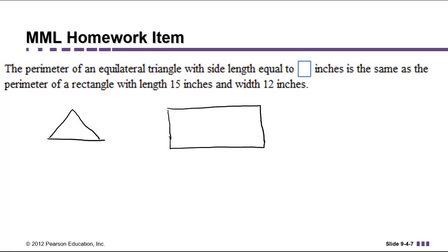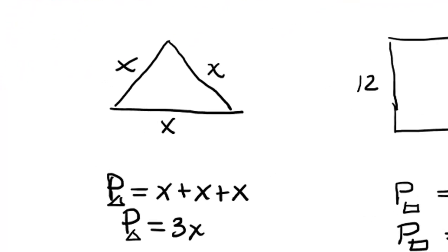We are looking for the lengths of the sides of the triangle, so I'm just going to call them x. We know the lengths of the sides of the rectangle, which are 15 and 12. Now let's read through the problem again. We're told that the perimeter of an equilateral triangle with side length equal to blank is the same as the perimeter of a rectangle. Although we don't have a numerical value for the perimeter of the triangle, we do know that it's x plus x plus x, or 3x.